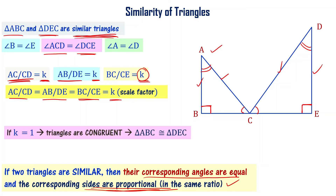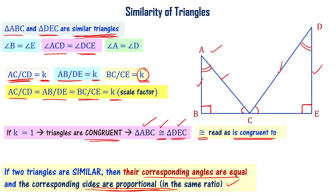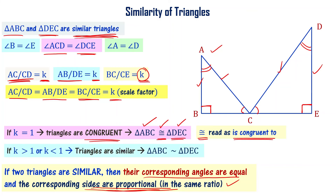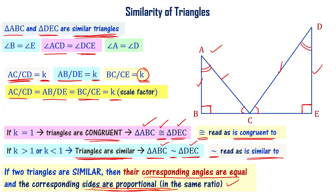If k equals 1, then the triangles are said to be congruent — meaning they exactly match each other. So triangle ABC is congruent to triangle DEC. If k is greater than 1 or less than 1, the triangles are similar but not congruent. Triangle ABC is similar to triangle DEC.